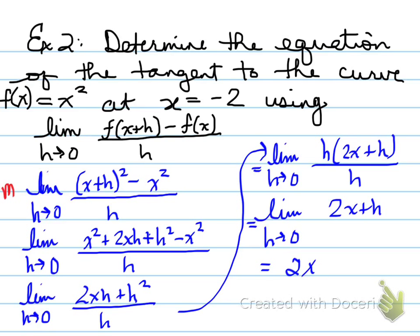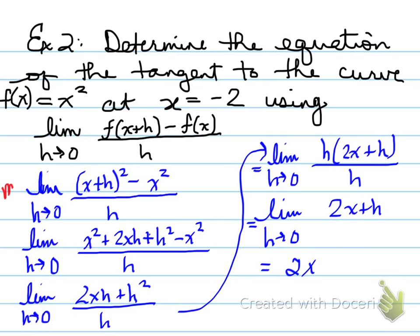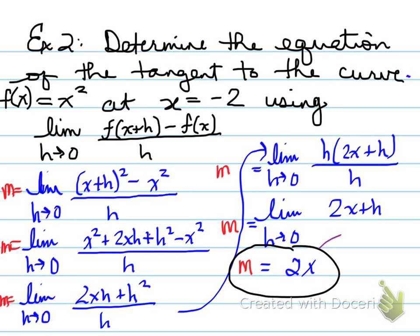Now this is the general result. We apply the limit: plug in zero for h. Our earlier restriction — that the denominator would be zero — is no longer valid because the denominator is gone. So making h = 0, it becomes negligible, and we end up with 2x. This is the general slope of the tangent line — not the equation of the tangent line itself, just the slope at any point on the curve x².